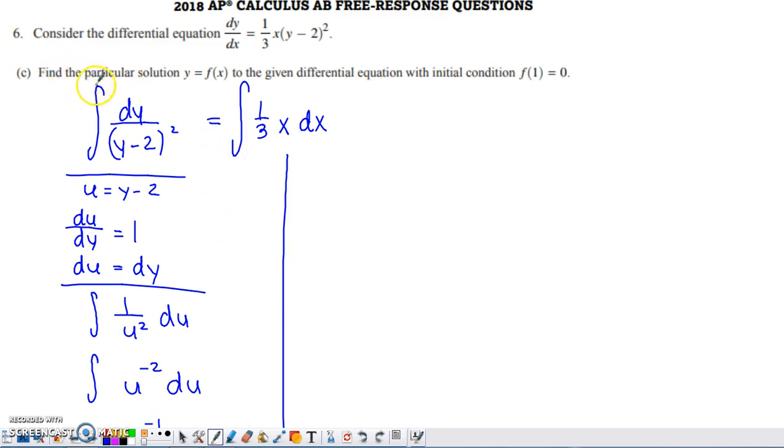The last part here asks us to find a particular solution to this differential equation with that same condition that we just used back in part B. So, I separated my variables by dividing the left side of the equation by this quantity here. I multiplied the right side of the equation, which now only had a one-third x left there, by dx. And then I integrated both sides in order to go about solving the differential equation.